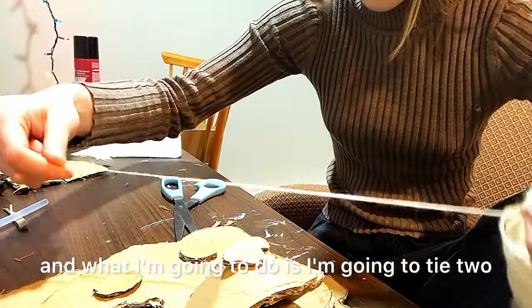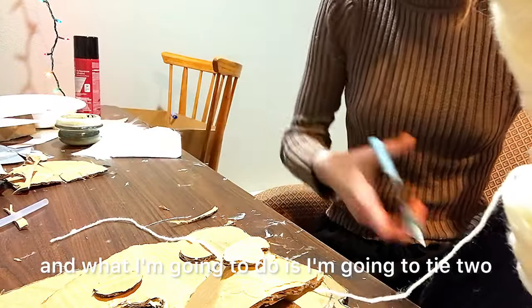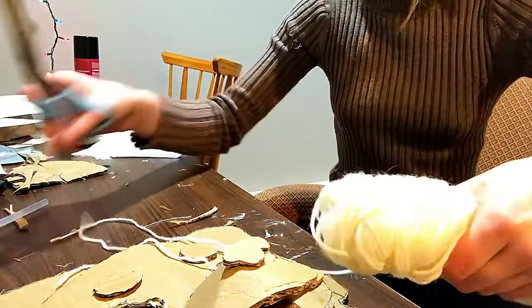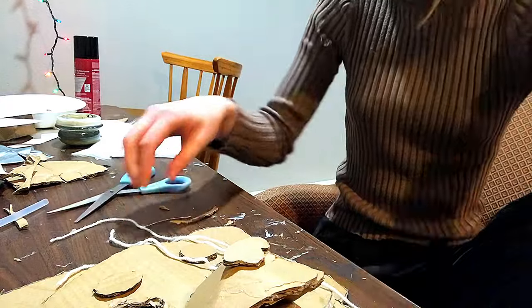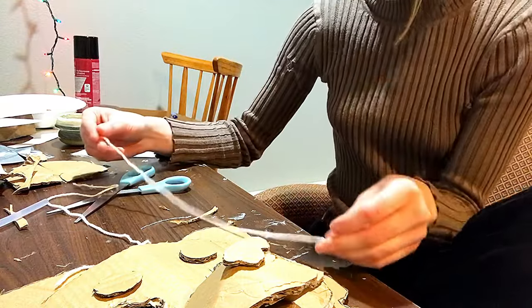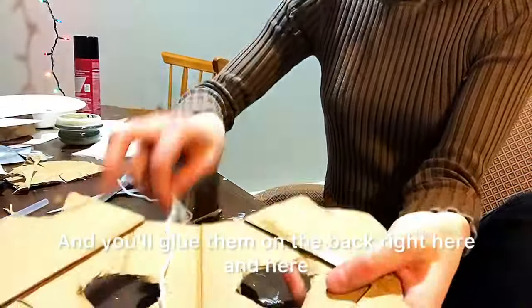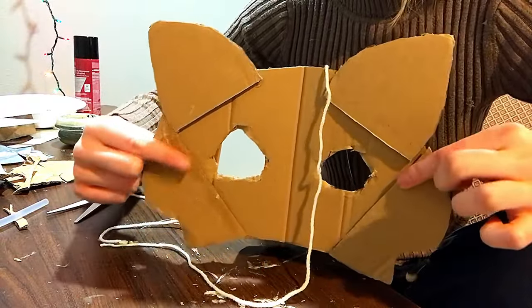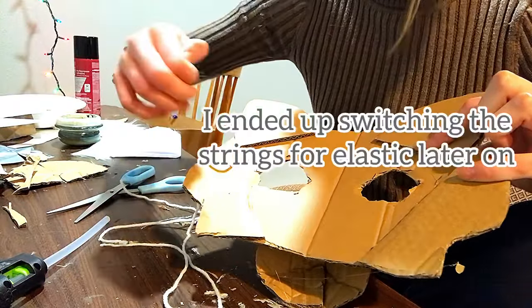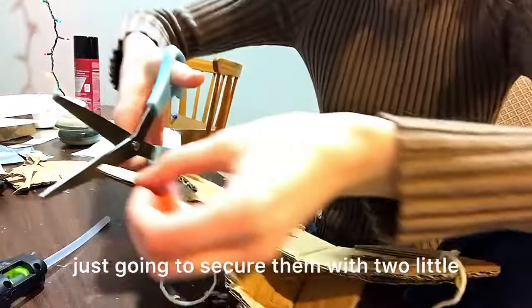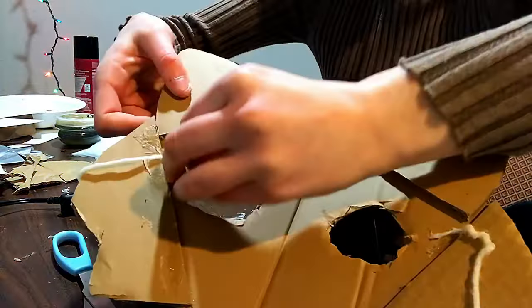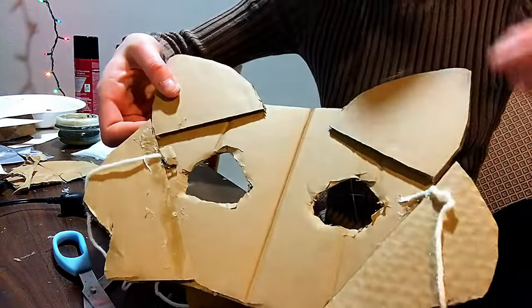So, I have some yarn here, and what I'm going to do is I'm going to glue two pieces on. You want them to be about the same length. And I have mine about this long, probably a foot, foot and a half. And you'll glue them on the back, right here and here, so to the sides of the eyes. I'm just going to secure them with two little pieces of cardboard. So, I'll put a dot of glue on there, and then just sandwich the cardboard together. And that will help keep the string from falling off.